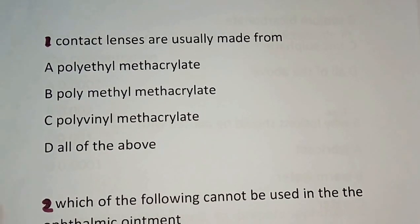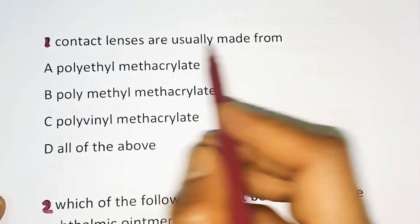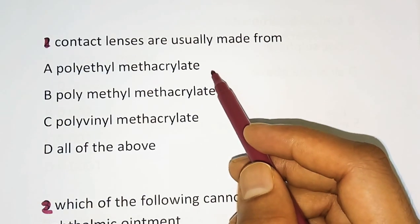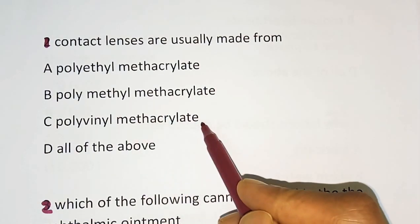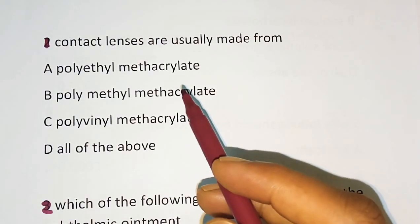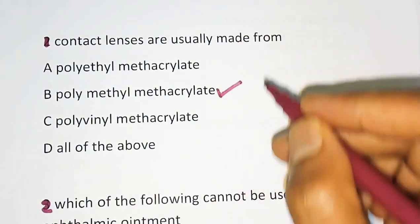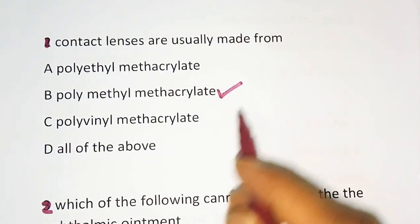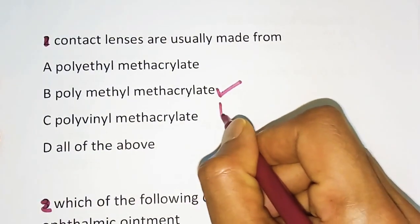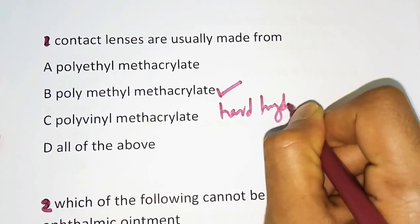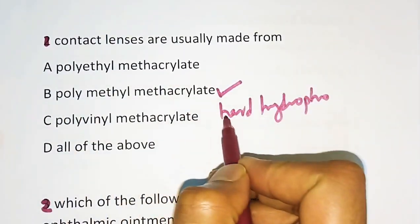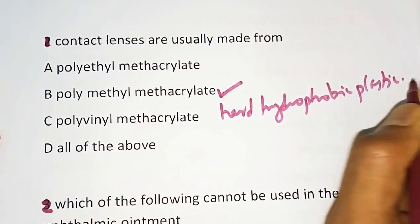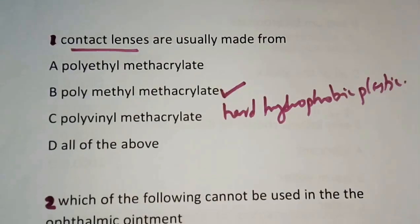So we will move to the first question of the video. Contact lenses are usually made from — options are: polyethyl methacrylate, polymethyl methacrylate, polyvinyl methacrylate, or all of the above. The correct answer is polymethyl methacrylate. Polymethyl methacrylate is a hard hydrophobic plastic, and from that, contact lenses are made. Contact lenses are of two types: hard contact lenses and soft contact lenses.